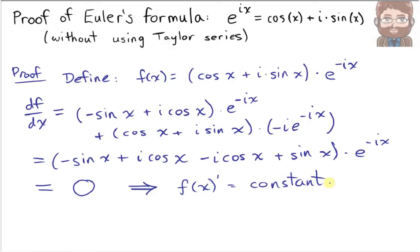Now the question is, what constant will this be equal to? Well, to find that out, let's actually evaluate the original function at a point. So f(0) will be easy enough to do. It's going to be cosine 0 plus i times sine 0 times e to the negative i times 0,